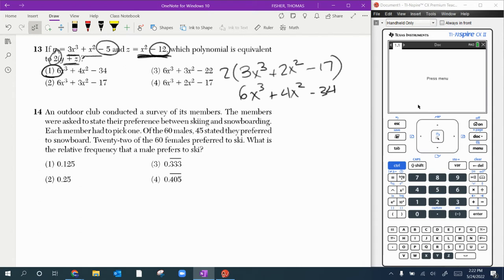Moving on to the next. So we've got a survey. Relative frequency that a male prefers to ski. So we're looking at this one, trying to figure out what frequency of males prefer skiing. So of the 60 males, it says that 45 prefer to snowboard. And then 22 of the females prefer to ski. So 60 males. So we can make a little table here. Male, female, and this is snowboarding versus skiing. So there's 60 total males.